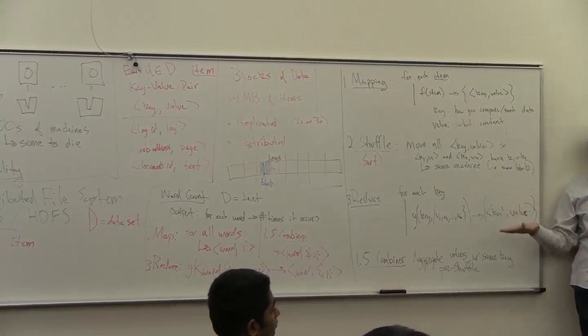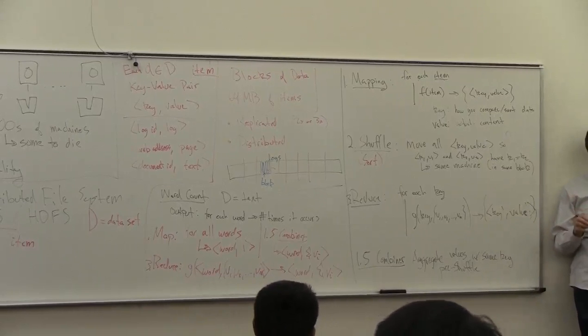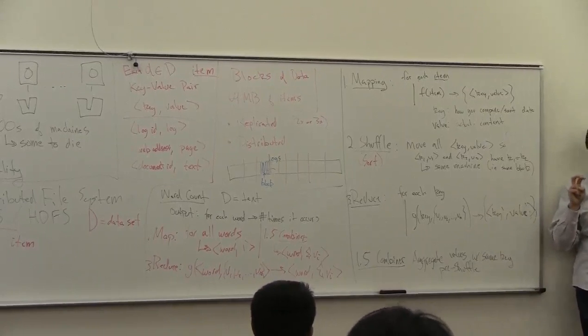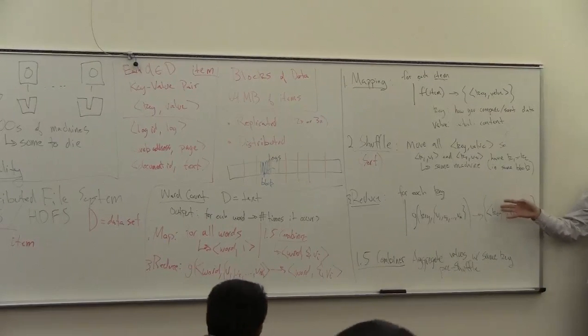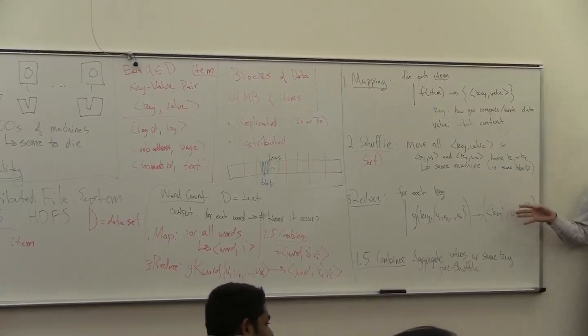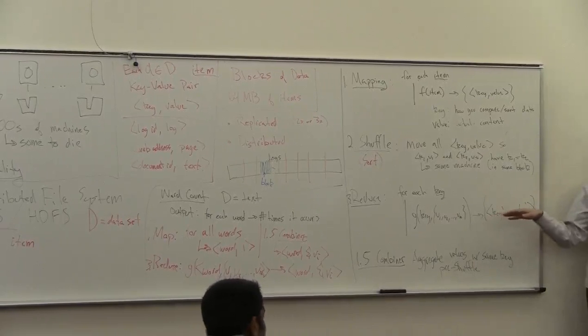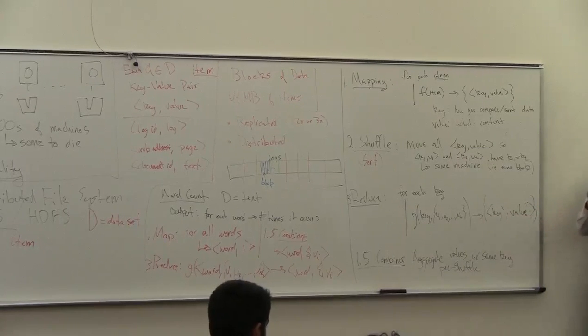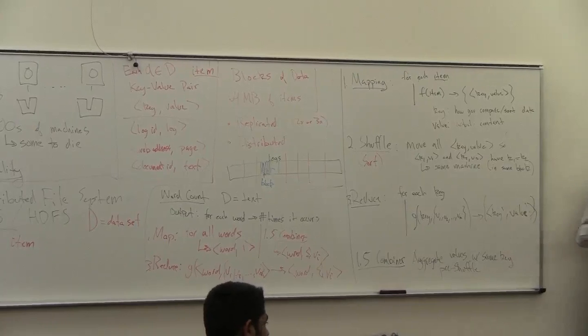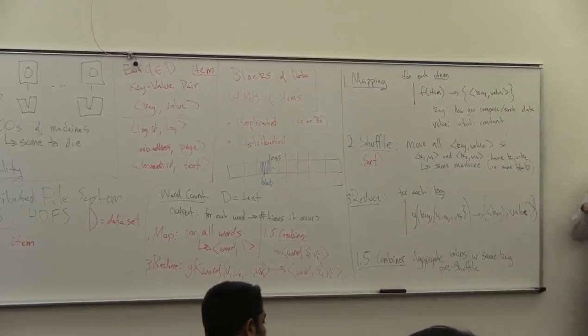And in some of these more complex rounds, you have this phenomenon called the Curse of the Last Reducer, which is where one reduce, one machine has a lot of the data. Say, the one that has the word, the, has seven percent of all the words in each of the process. But maybe you have a thousand machines. So each machine should have going down one tenth of one percent. So one with the word, the, has 70 times that amount of the average machine. So you need to wait for that.